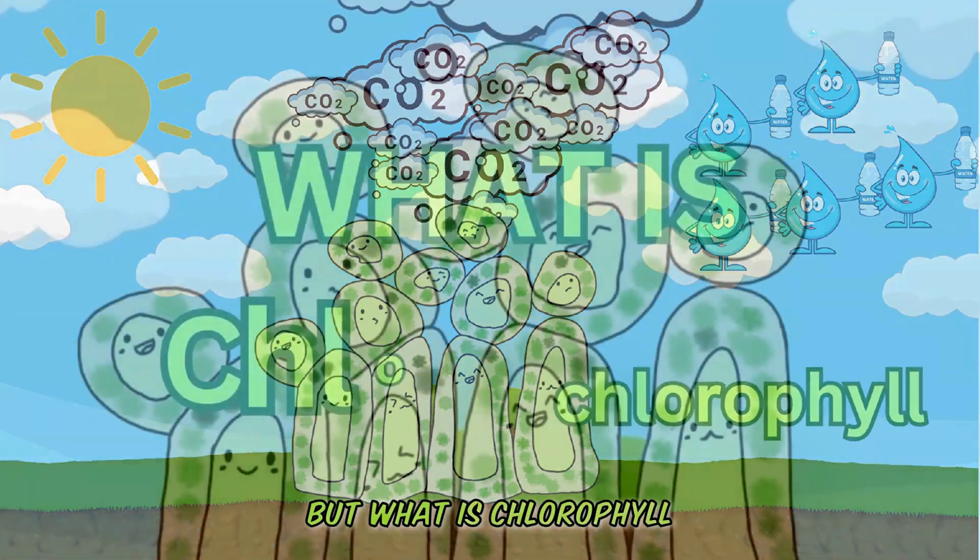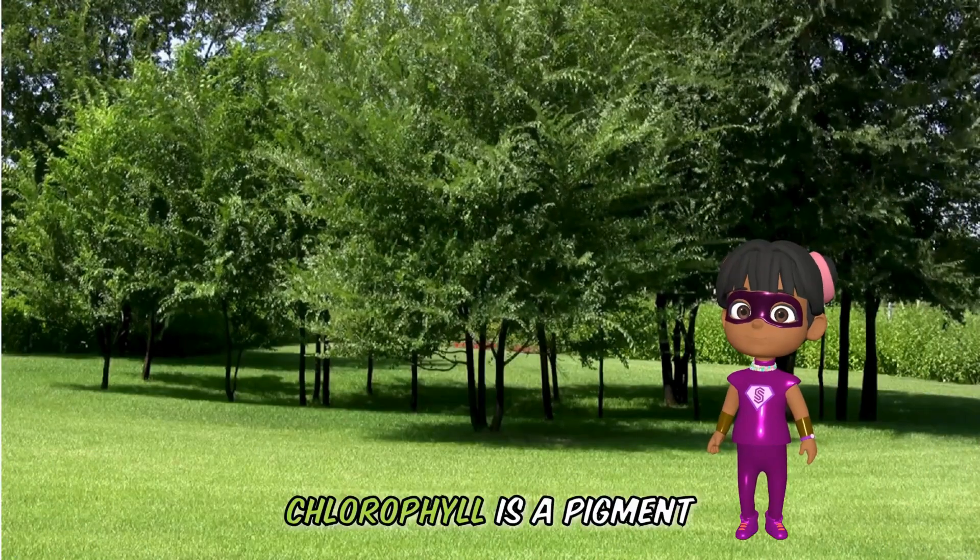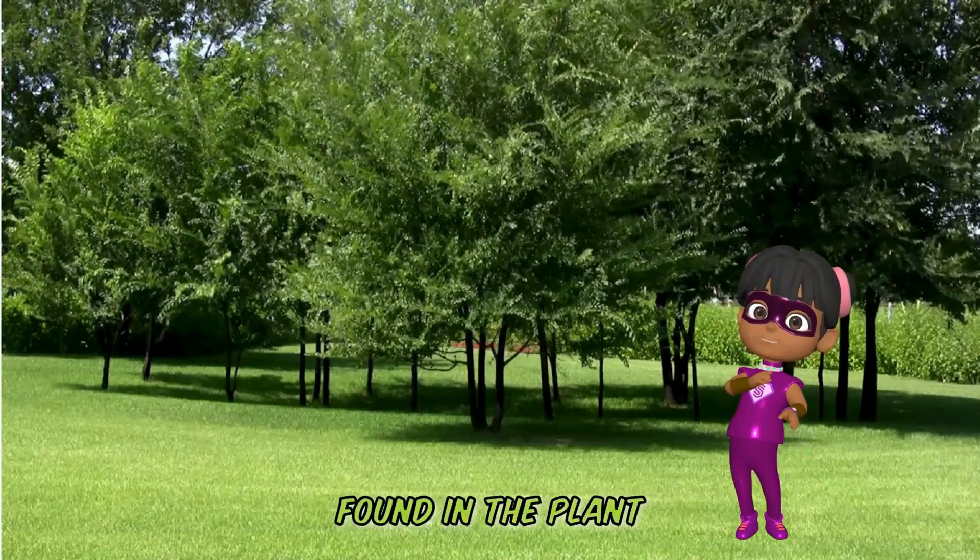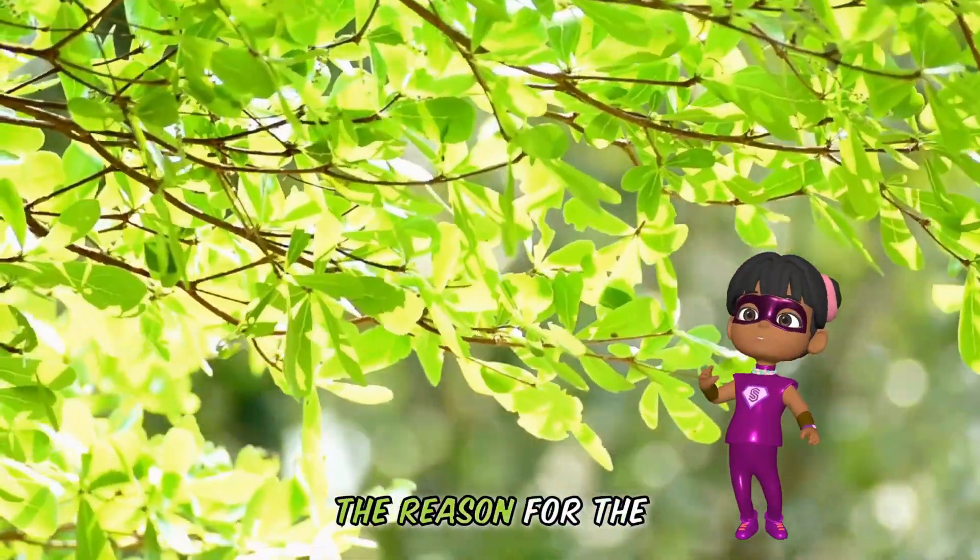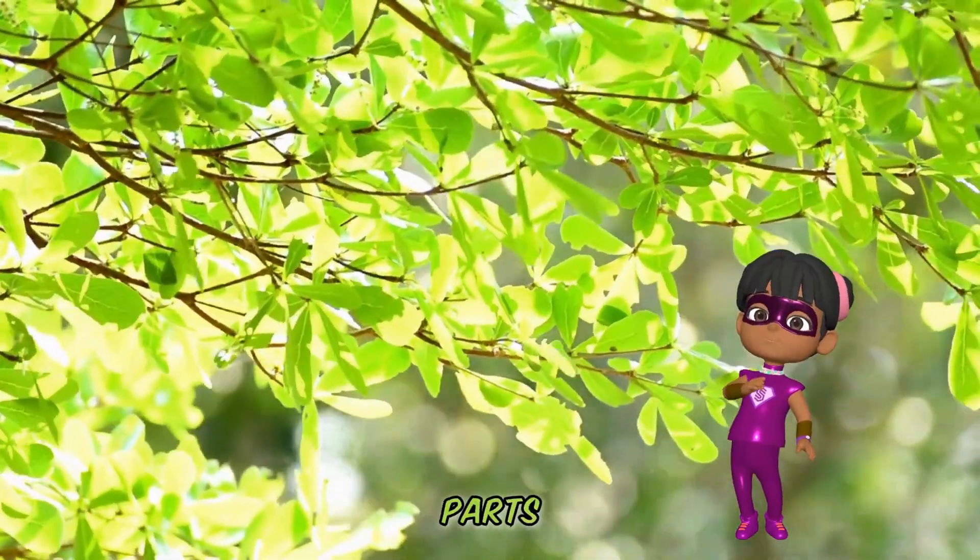But what is chlorophyll, and why is it important? Chlorophyll is a pigment found in the plant cells, and it is the reason for the green color of grass, leaves, and other plant parts.